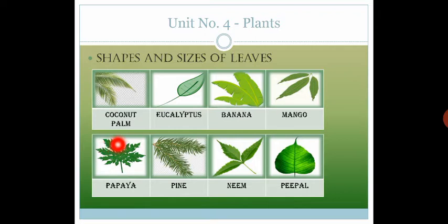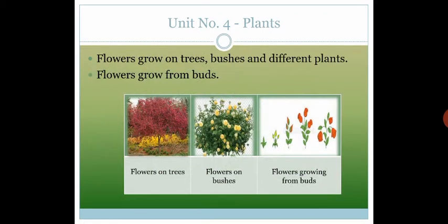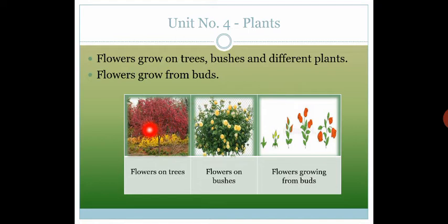Now we will discuss about flowers. Flowers grow on trees, bushes, and other kinds of plants. Look at this picture — آپ کو نظر آ رہا ہے کہ یہ flowers جو ہیں یہ tree کے اوپر grow کیے ہیں، اور یہ والے flowers bushes کے اوپر ہیں۔